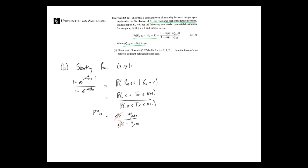The kpx term cancels. What we are left with: the numerator is 1 minus s·px+k, and the denominator equals μ* x+k — we know that this denominator holds for integer ages. Since the denominators are equal due to our assumption from equation 3.17, the numerators must be equal as well. We can conclude that s·px+k has to equal e to the power minus μ* x+k times s.